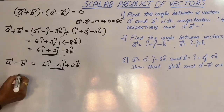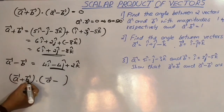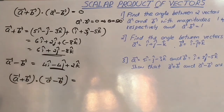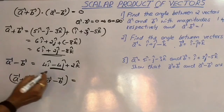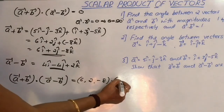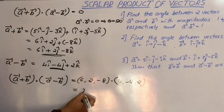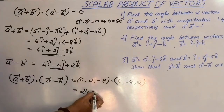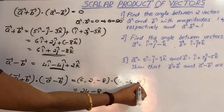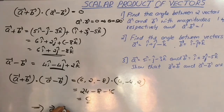Now let us consider the dot product between vector A plus vector B and vector A minus vector B, that is (6, 2, -8) dot (4, -4, 2). Simplifying: 6×4 equals 24, 2×(-4) equals -8, and (-8)×2 equals -16. So 24 minus 8 minus 16 equals 0. This implies that vector A plus vector B is perpendicular to vector A minus vector B.